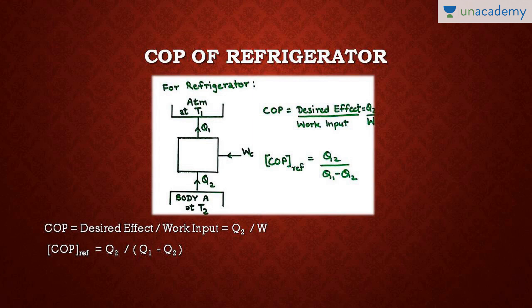The COP of a refrigerator is desired effect upon work input. The body A has to be cooled; we extract heat Q2 from it, and for doing that we supply work Wc. So COP of refrigerator is Q2 upon work input W, which can also be written as Q2 upon (Q1 minus Q2). In a refrigerator, the desired effect is cooling, so COP of refrigerator equals Q2 upon (Q1 minus Q2).